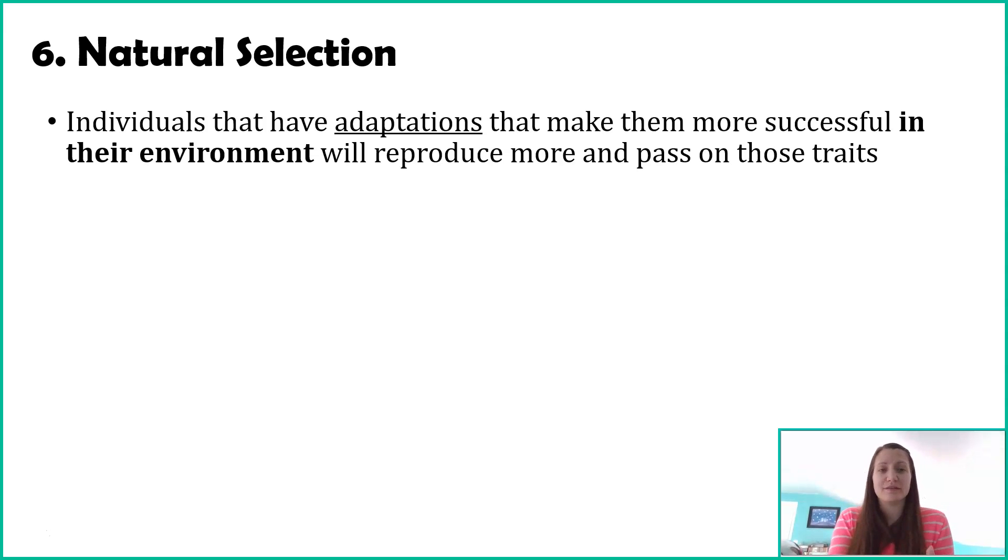Individuals have adaptations. What I mean by an adaptation, it's a characteristic. It can be a physical, it could be a molecular characteristic that makes that organism more successful in their environment. I'm not saying more successful compared to other males or other females. Sexual selection would be more successful in that mate choice. But with natural selection, we're saying more successful in your environment, meaning you're able to get more food. You're able to survive a harsh winter. You're able to escape predation. You're able to survive more. And because of that, if you can survive longer, if you can live longer, you're going to reproduce more and you're going to pass on those traits you have to the next generation.